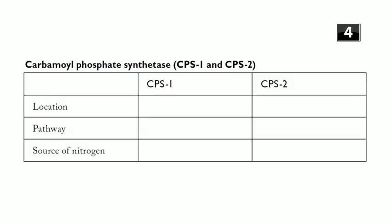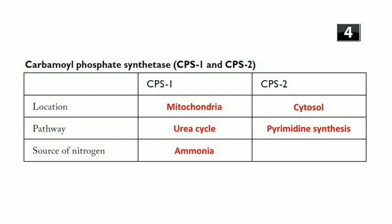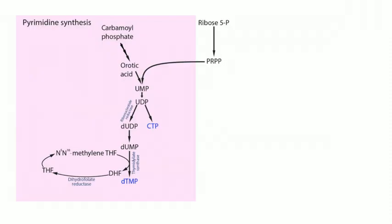There's also CPS1 — don't confuse them. Three key differences: first, location — CPS1 is in the mitochondria, CPS2 is in the cytosol. Second, pathway — CPS1 is involved in the urea cycle, CPS2 is involved in pyrimidine synthesis. Third, nitrogen source — CPS1 gets its nitrogen from ammonia, CPS2 gets its nitrogen from glutamine.